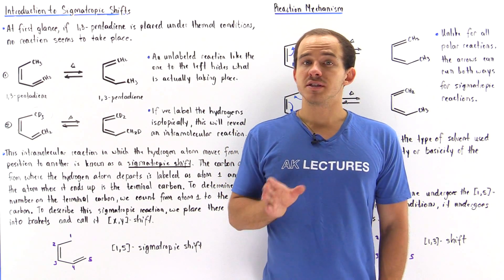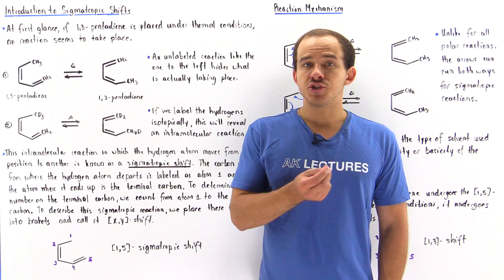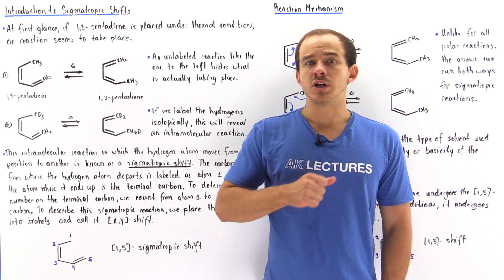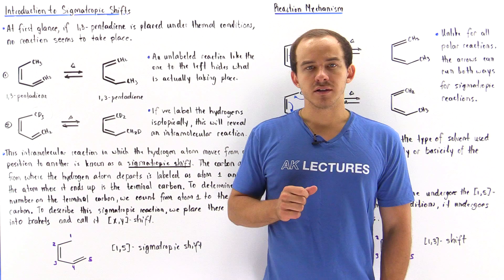A sigmatropic shift is nothing more than an intramolecular reaction in which an H atom moves from one position on a molecule to a different position on that same molecule.